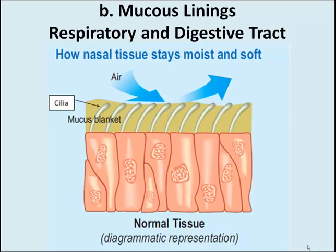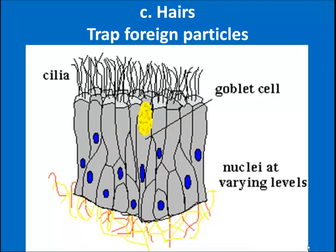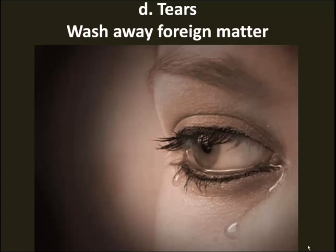The mucous linings trap pathogens, and then with the cilia they usually move them along so you can excrete or get rid of them. The cilia, or hairs, also capture foreign particles to prevent pathogens from entering. We also have tears, which wash away foreign matter that could get in through your eyes.